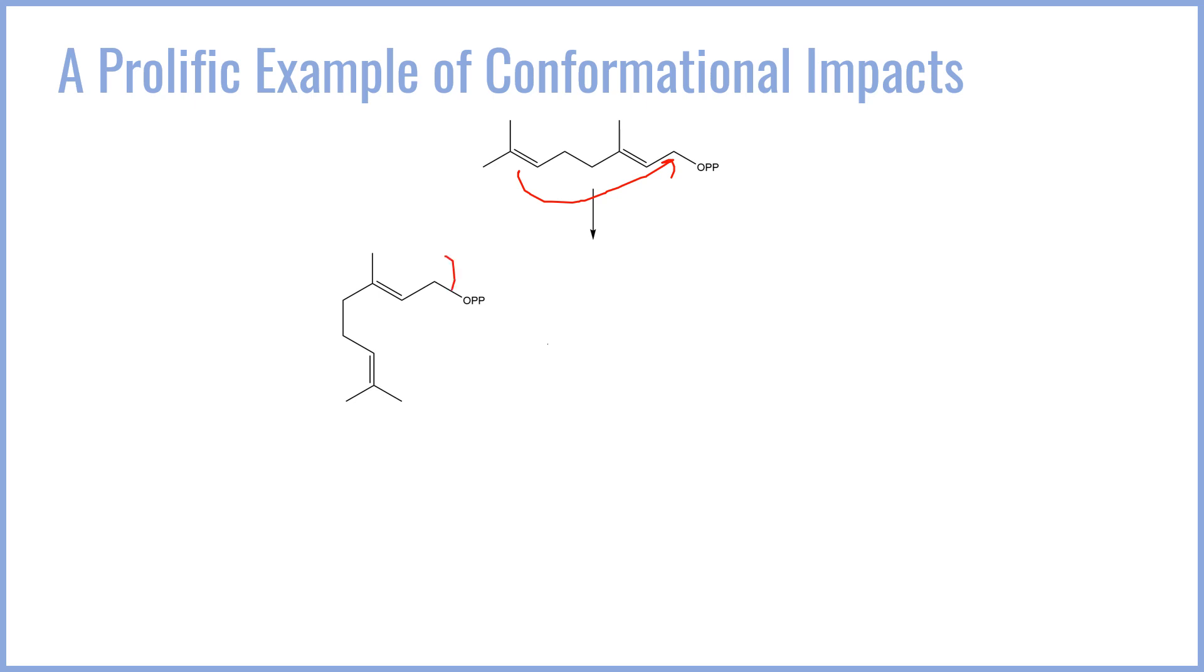We can actually migrate the pyrophosphate leaving group to this carbon and migrate the double bond to this bond here. This gives us this species, where we now have a single bond at this position. This single bond is able to freely rotate, and we can rotate into this conformer here, where now we have this carbon much closer to the final alkene. We can then re-migrate the pyrophosphate back to this position and re-migrate the double bond to this position. You might wonder how these migrations are happening, as that's something you probably haven't seen before. Enzymes use magnesium ions to help coordinate the pyrophosphate and help move the double bond back and forth. So this isn't just happening completely on its own, the enzyme is actually pushing it along.